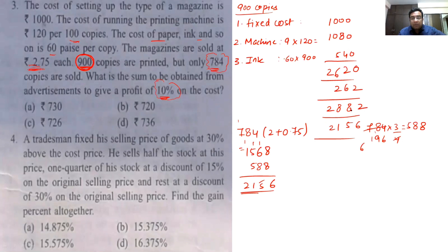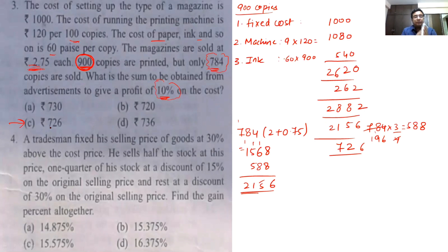The difference works out to Rs.726. So Rs.726 is what I need to recover from advertisements. That is the answer. If anyone has any problem with this question, let me know — this is a very good practical question.